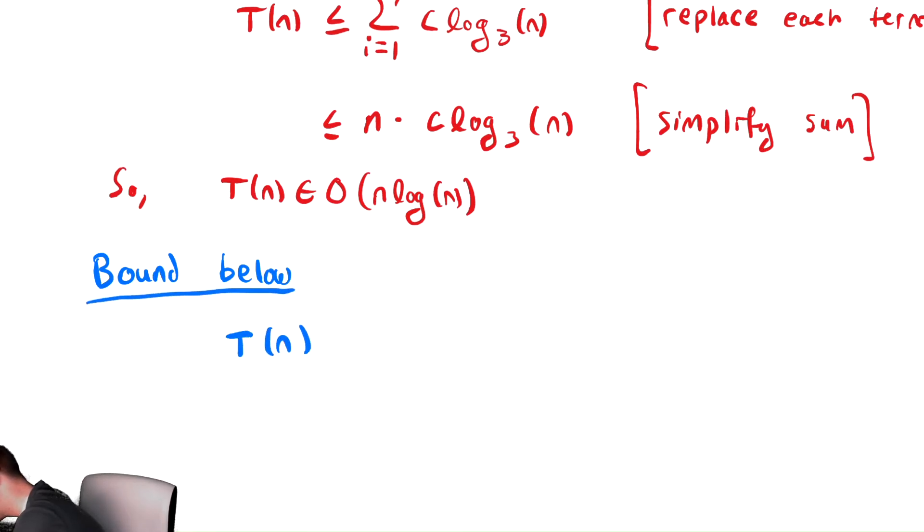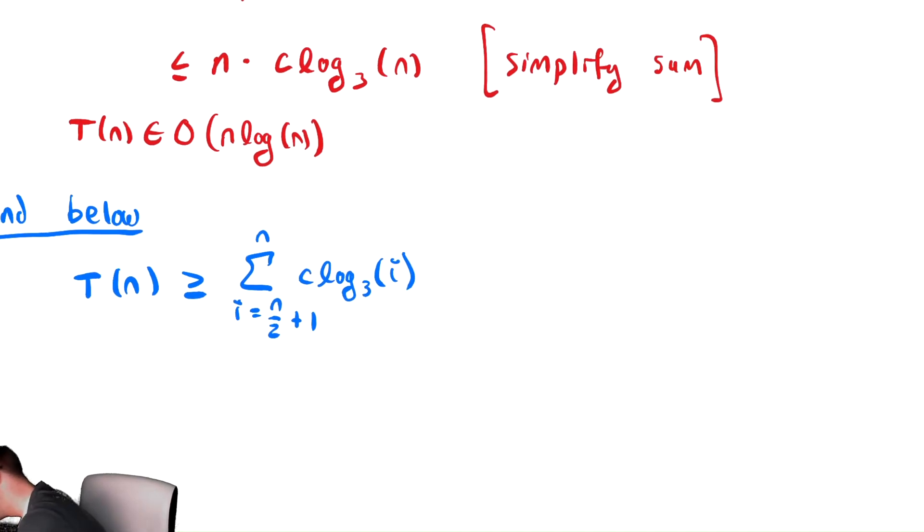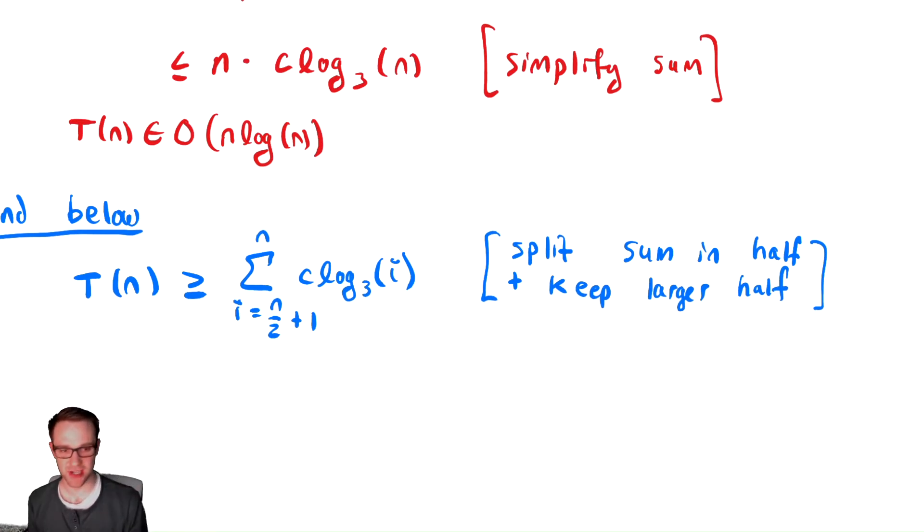We have T of n. When we split it in half, we keep the larger half. So for my original sum, I'm going to change the bottom bound to n divided by 2 plus 1 to n of C log base 3 of i. What we've done is we've split the sum in half and kept the larger half. Splitting in half isn't sacred. In general, we're just splitting the sum and keeping the larger of the two.